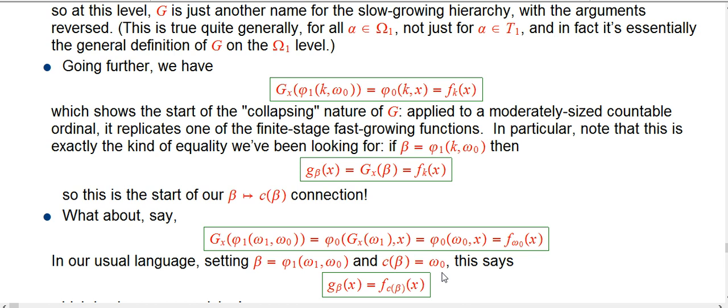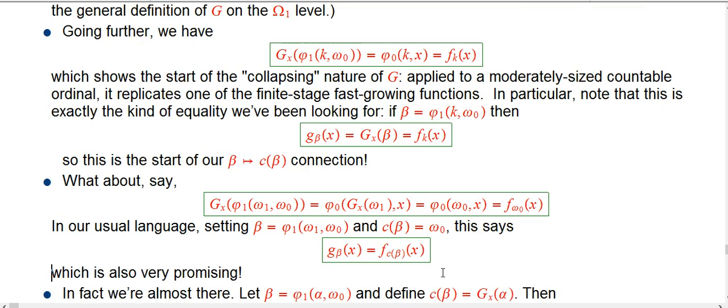Namely, c of beta is just omega naught, the smallest infinite ordinal. So, this is very promising. We seem to have something where g's and f's are lining up on the nose and that's what we wanted.